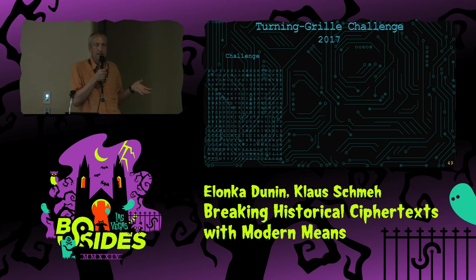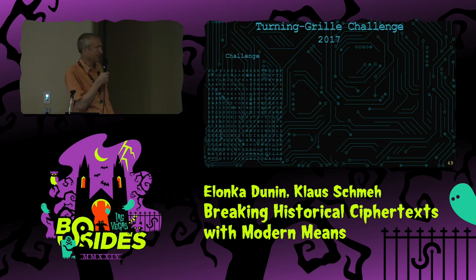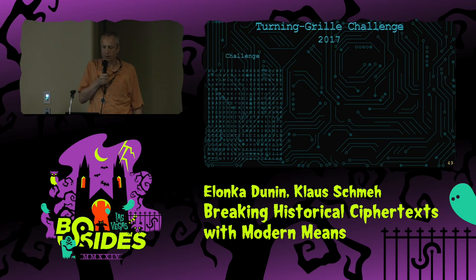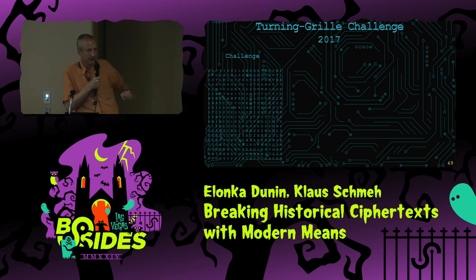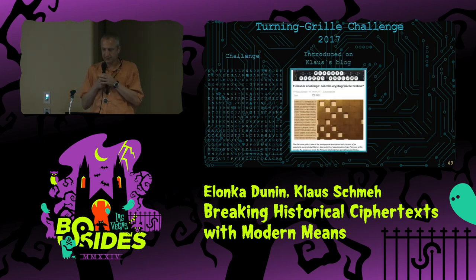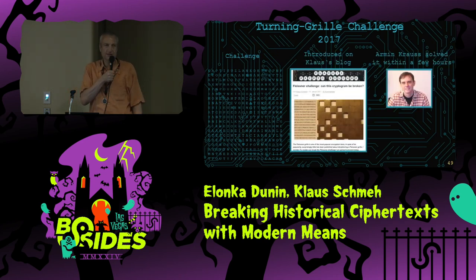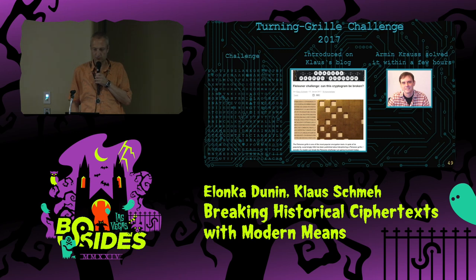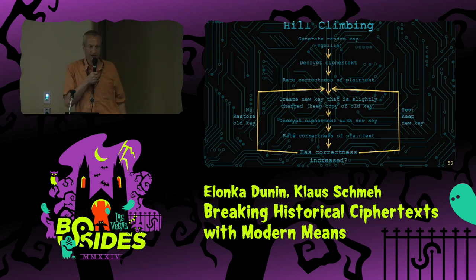It wasn't clear how well this would work until 2017 — at least I didn't find anything in the literature. So I created a challenge and published it on my blog. I took a text, encrypted it with a turning grill, a pretty large one — 20 by 20 — and published it on my website for people to solve. Armin Koase, a German codebreaker, only needed a few hours to break this encryption with hill climbing. If you have the right tools and you're as good a codebreaker as Armin, it's quite easy.